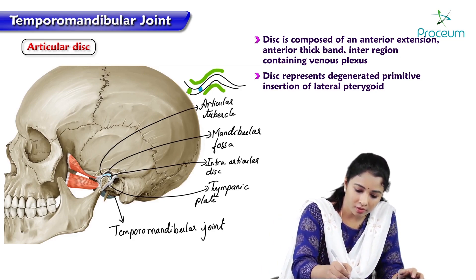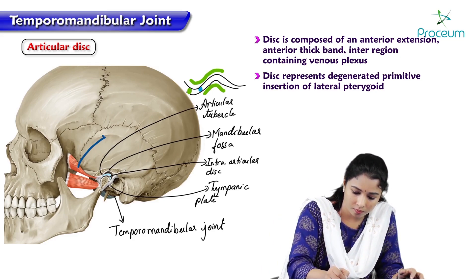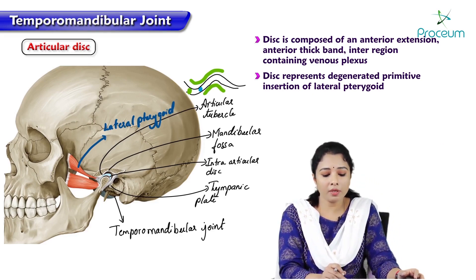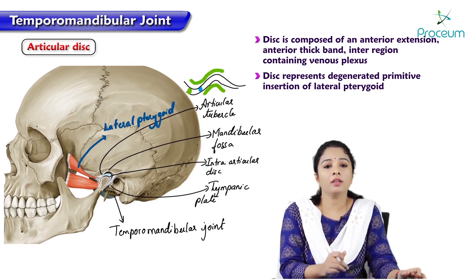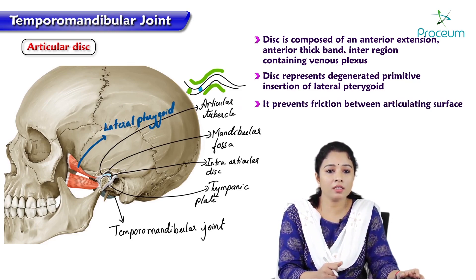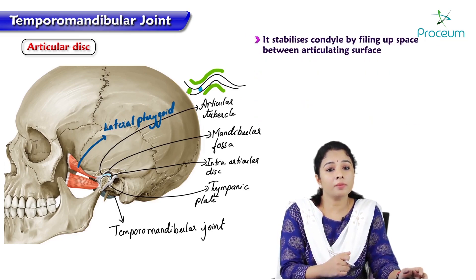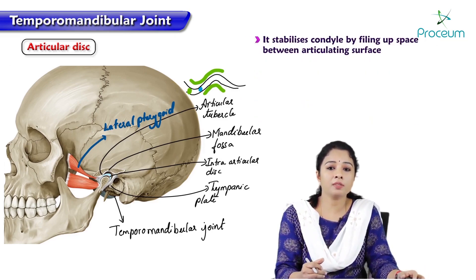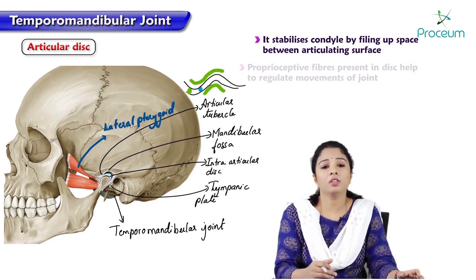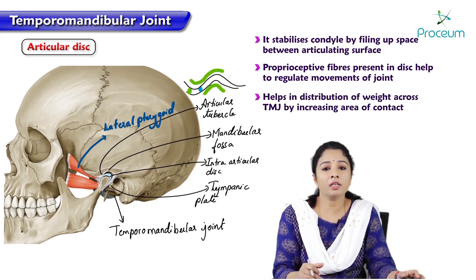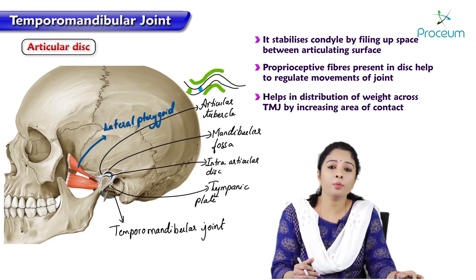The disc represents the degenerated primitive insertion of the lateral pterygoid muscle — it is morphologically a remnant of that muscle. The disc prevents friction between the articular surfaces, acts as a cushion and shock absorber, and stabilizes the condyle by filling the space between articulating surfaces. Proprioceptive fibers in the disc help regulate joint movements, and the disc increases the contact area to distribute weight across the joint.